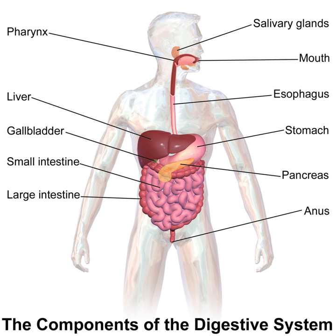Underlying the process is muscle movement throughout the system through swallowing and peristalsis. Each step in digestion requires energy, and thus imposes an overhead charge on the energy made available from absorbed substances. Differences in that overhead cost are important influences on lifestyle, behavior, and even physical structures. The major part of digestion takes place in the small intestine. The large intestine primarily serves as a site for fermentation of indigestible matter by gut bacteria and for resorption of water from digests before excretion.